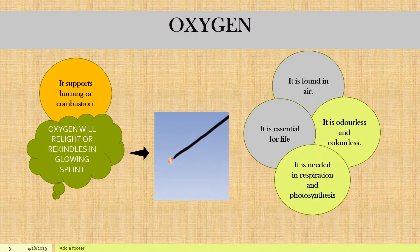Oxygen, which makes up 20% of air, is essential for life. It is odorless and colorless, and it is needed in respiration and photosynthesis. To test for oxygen, we need to know that it supports burning or combustion. If we expose a glowing splint to oxygen, it will relight or rekindle.